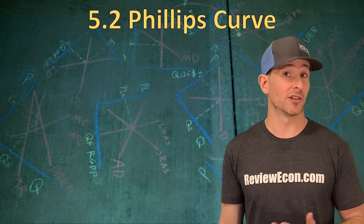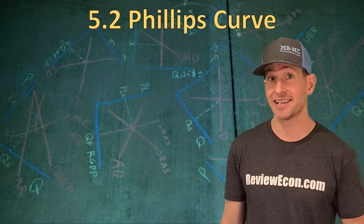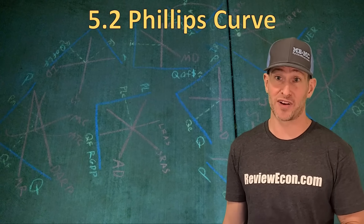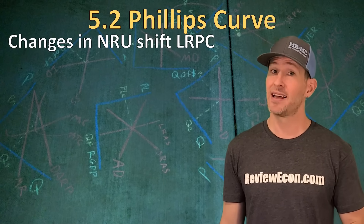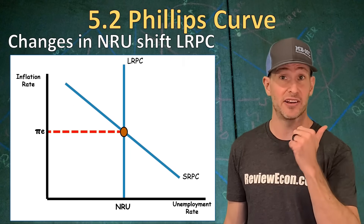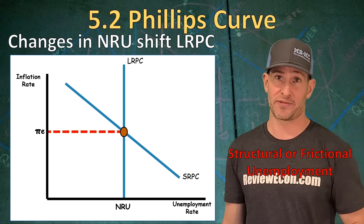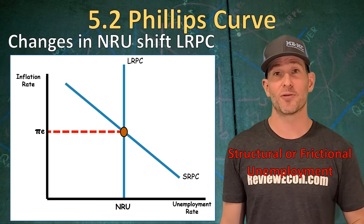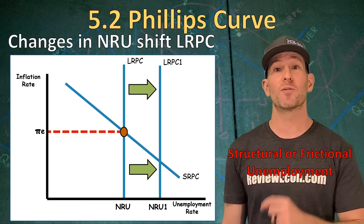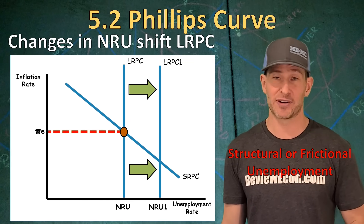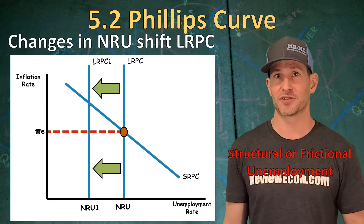So what causes the long-run Phillips curve to shift? Because it is aligned with the natural rate of unemployment, it shifts when there are changes in the natural rate of unemployment — that means changes in structural unemployment or frictional unemployment. If there's an increase in either one of those, we'll see a rightward shift of the long-run Phillips curve, and when there's a decrease in either one, we'll see a leftward shift of the long-run Phillips curve.